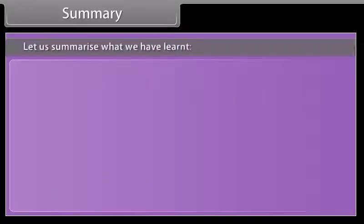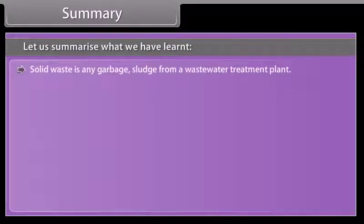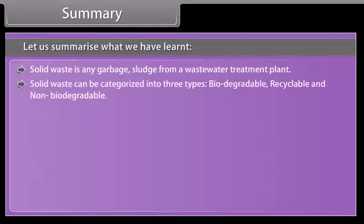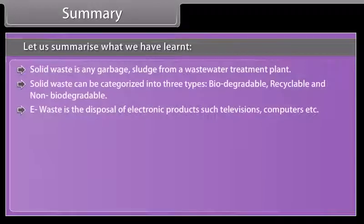Summary: Solid waste is any garbage or sludge from a wastewater treatment plant. Solid waste can be categorized into three types: biodegradable, recyclable, and non-biodegradable. E-waste is the disposal of electronic products such as televisions, computers, etc.